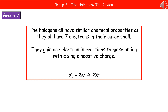Just like the alkali metals, the halogens are in a single group and therefore have similar chemical properties. The reason is that they all have seven electrons in their outer shell. When they react, they gain one electron to form an ion with a single negative charge. The ionic equation for this is: X₂ + 2e⁻ → 2X⁻, where e⁻ is the symbol for an electron.